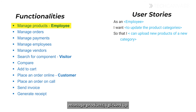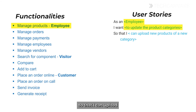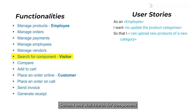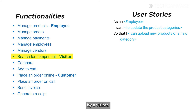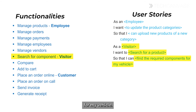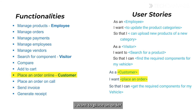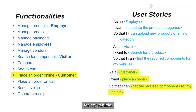Now let's write the user stories for each one. For manage products, focusing on updating product categories: as an employee, I want to update the product category so that I can upload new products of a new category. Second: as a visitor, I want to search for a product so that I can find the required components for my vehicle. Third: as a customer, I want to place an order so that I can get the required components for my vehicle.